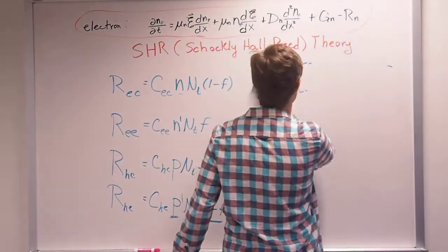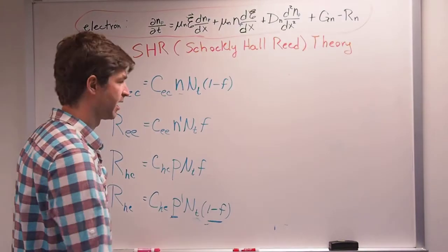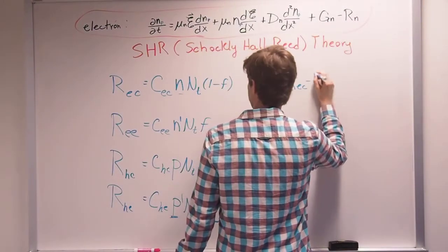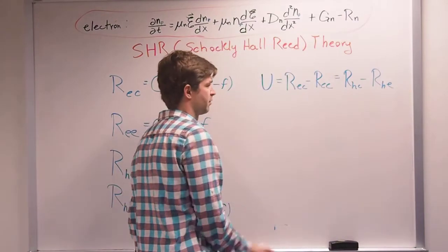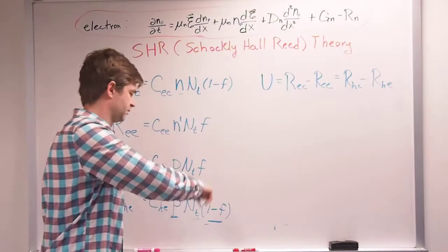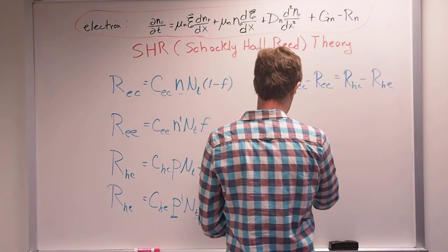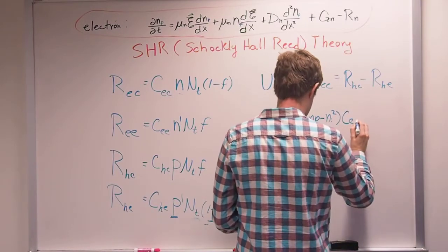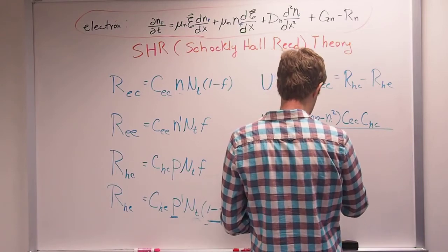At equilibrium — steady state, nothing changing over time — the net recombination rate U equals R_EC minus R_EE, which also equals the hole capture rate minus the hole emission rate. Electron capture minus electron emission equals hole capture minus hole emission. Setting these equal, we get U equal to N_T · (NP − n_i²) · C_EC · C_HC over C_EC · (N + N′) plus C_HC · (P + P′).